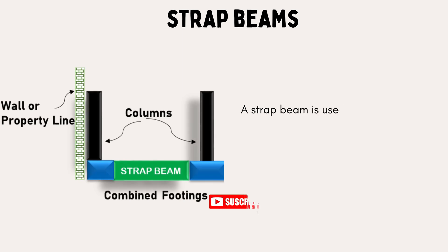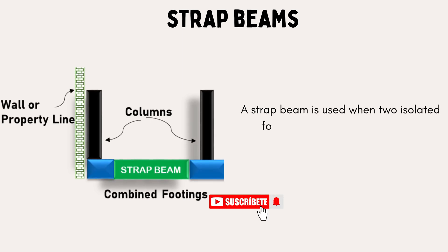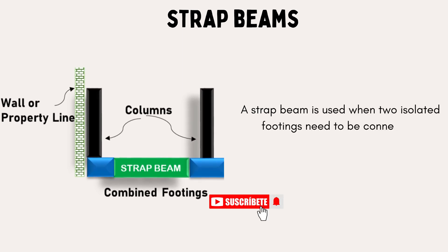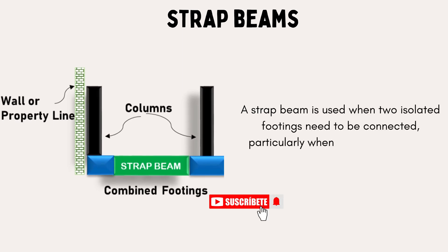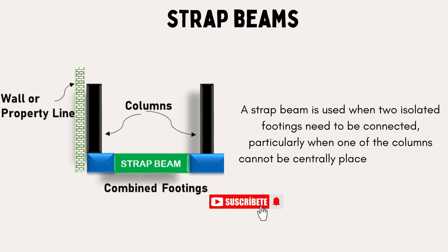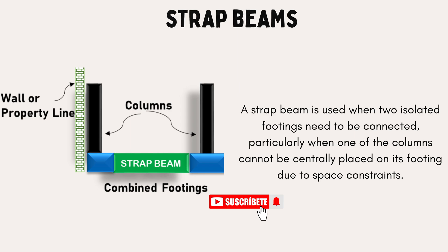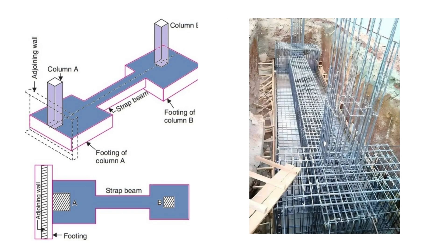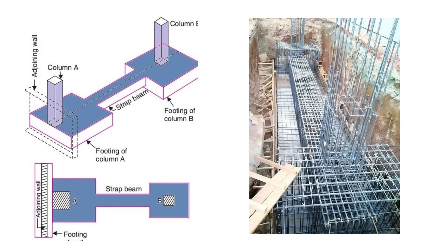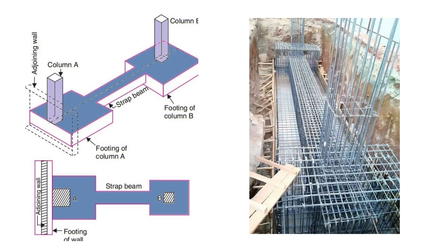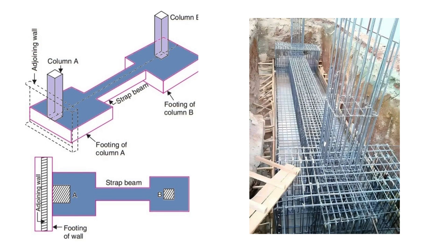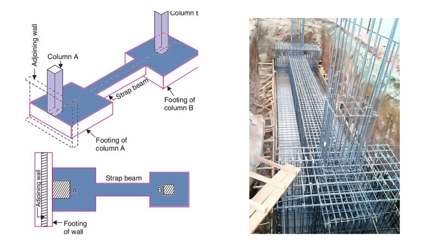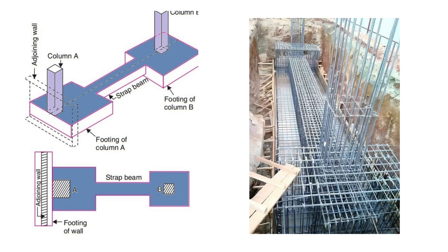A strap beam is used when two isolated footings need to be connected, particularly when one of the columns cannot be centrally placed on its footing due to space constraints. In such cases, the strap beam connects the two footings to transfer the eccentric load back to the central footing, preventing unequal settlement.